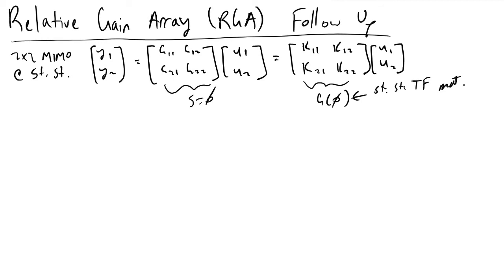With this steady state transfer function matrix, we can evaluate our relative gain array very quickly. The way we do that, now that we've understood the principles behind it, is pretty straightforward. The first thing we'll do is evaluate the inverse of this steady state transfer function matrix and then take the transpose of it.